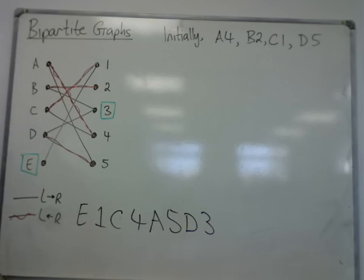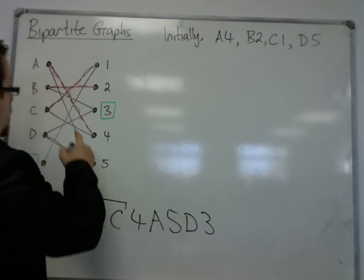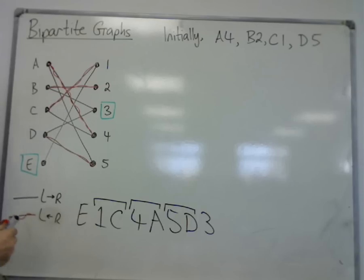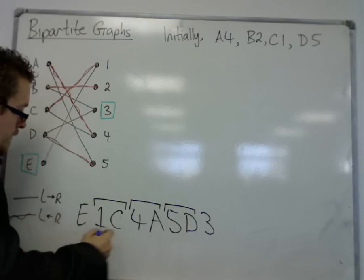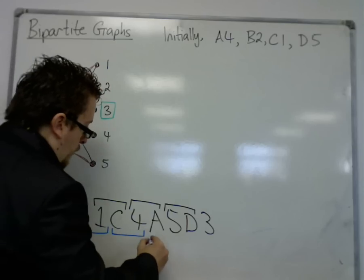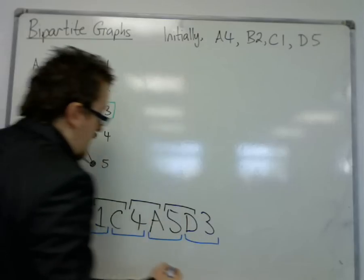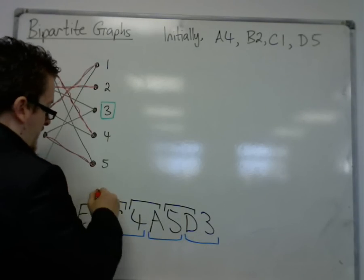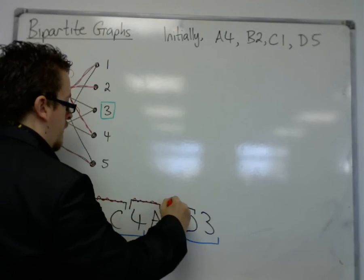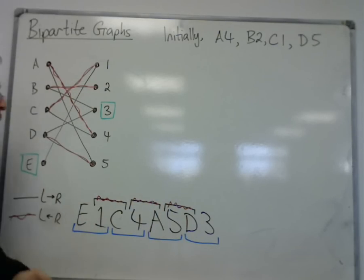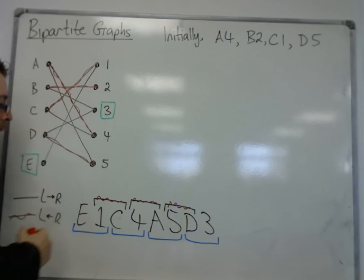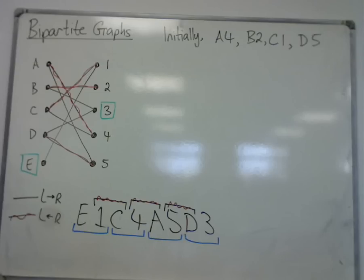Now what's happened is that I've travelled along one C, four A, and five D. And I'm now going to replace these with E1, C4, A5, and D3. So these were the old initial matchings that are now redundant. And I'm replacing three of the choices with now four new ones, which will work.